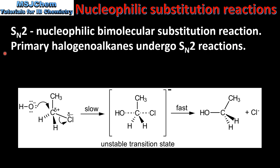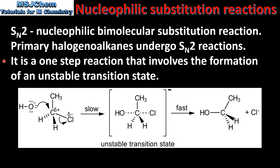Primary haloalkanes undergo SN2 reactions. It is a one-step reaction that involves the formation of an unstable transition state. Here we have the full SN2 mechanism. We start with a primary haloalkane, we have an unstable transition state, and the final product is a primary alcohol.